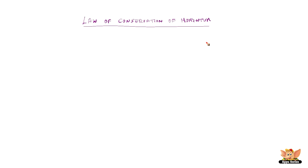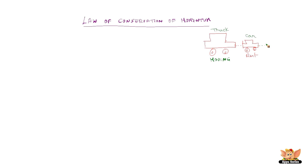Before understanding the law, let's look at an example. There is a truck going in one direction and it hits a stationary car. The truck is moving and hits the stationary car. When it hits the stationary car, the car starts moving because of the impact. And the truck's velocity goes down since it hit an object.